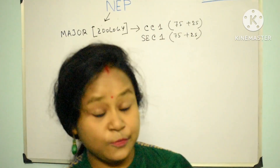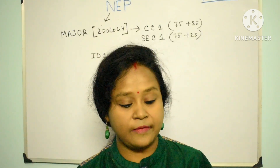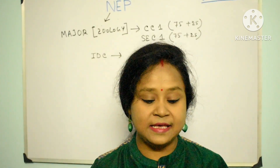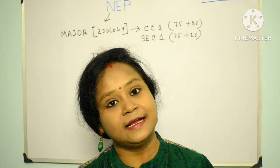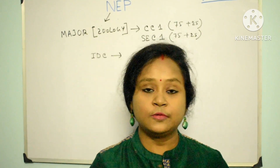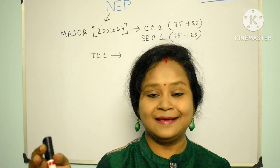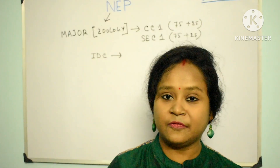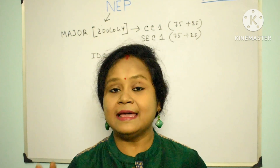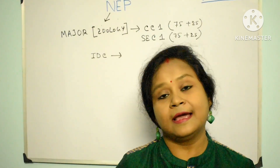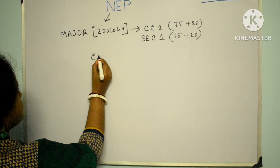The university will offer Zoology-related IDC as the paper of Animal Science, which will be selected by students pursuing major and minor courses other than Zoology — meaning students from Physics, Chemistry, Mathematics, Bengali, History, Geography, and other disciplines. Even students from arts background can take Zoology as an IDC subject.